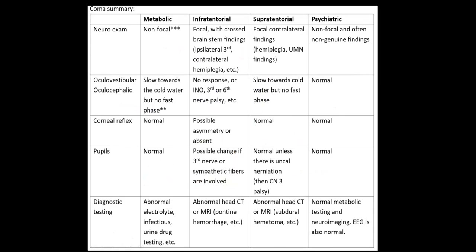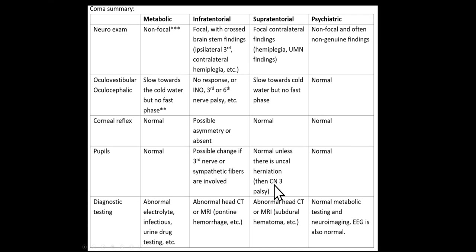The corneal reflex will be normal with everything except an infratentorial lesion — for example, a pontine hemorrhage, because the corneal reflex is cranial nerve five in and bilateral seven out. Pupils will be normal in metabolic coma and usually normal in other causes, unless in supratentorial coma we have uncal herniation causing a third nerve palsy with a dilated pupil. With a pontine lesion — most importantly a pontine hemorrhage — we'll get pinpoint pupils. A midbrain lesion might give a third nerve palsy.